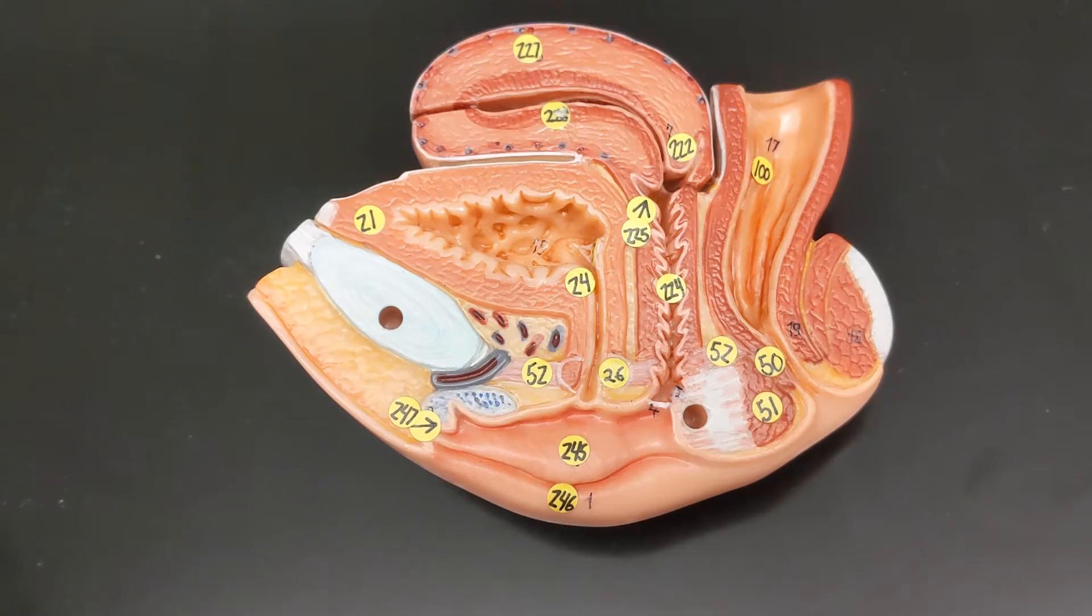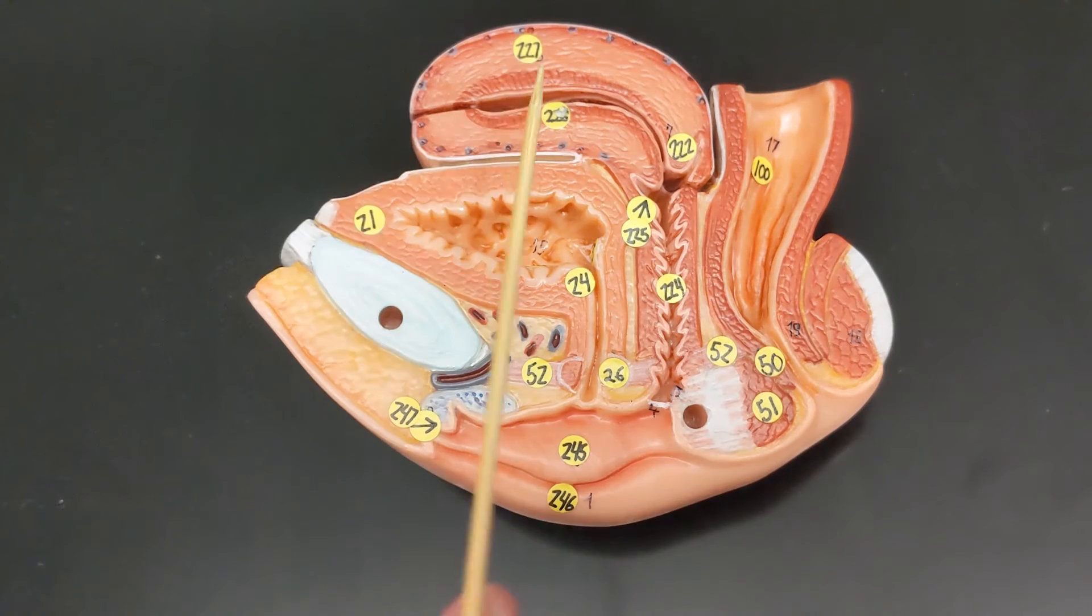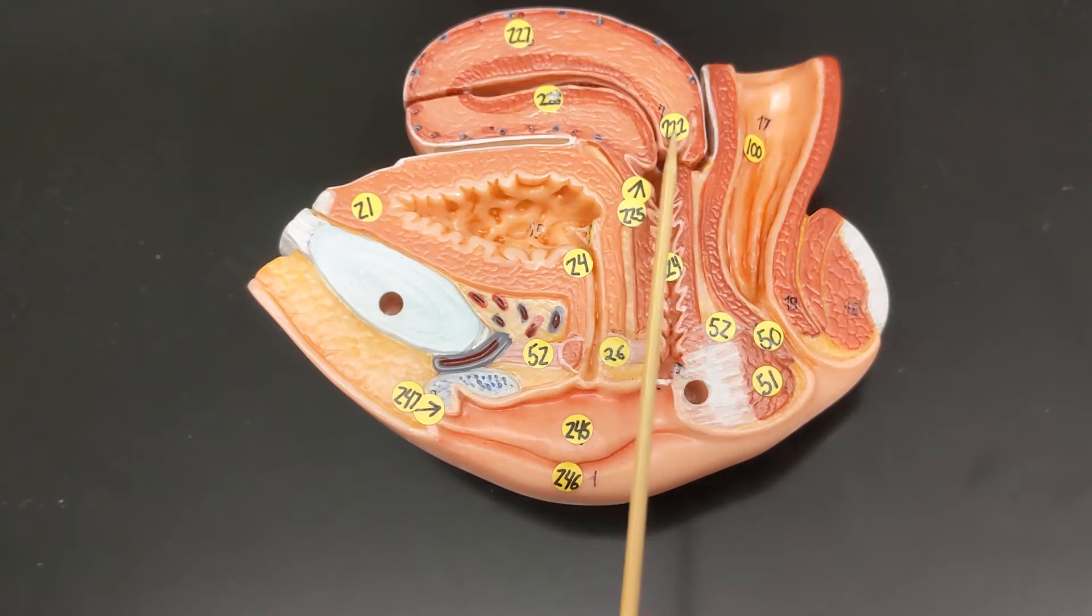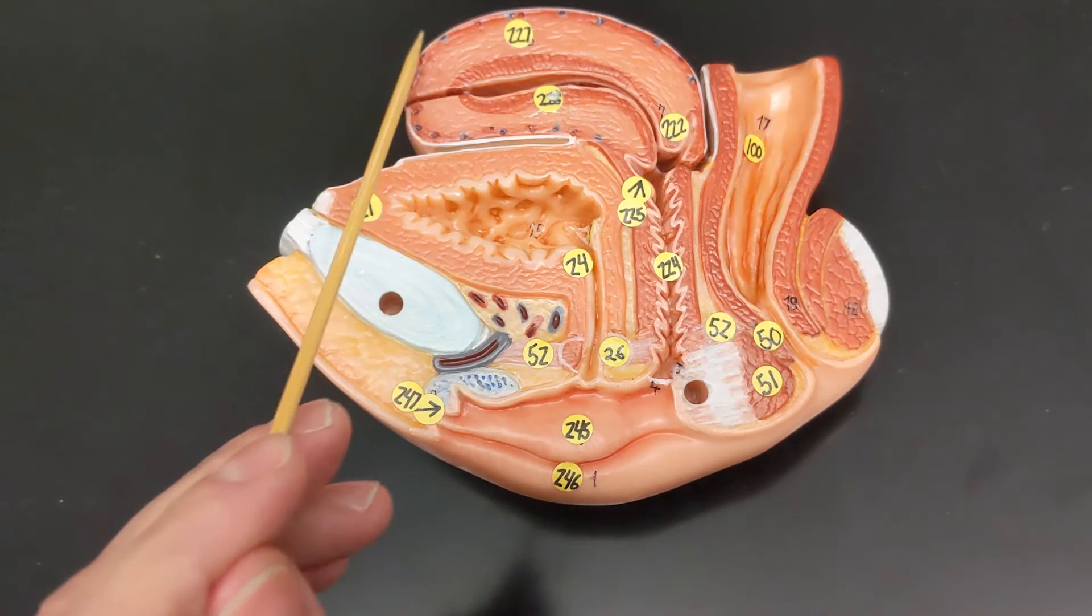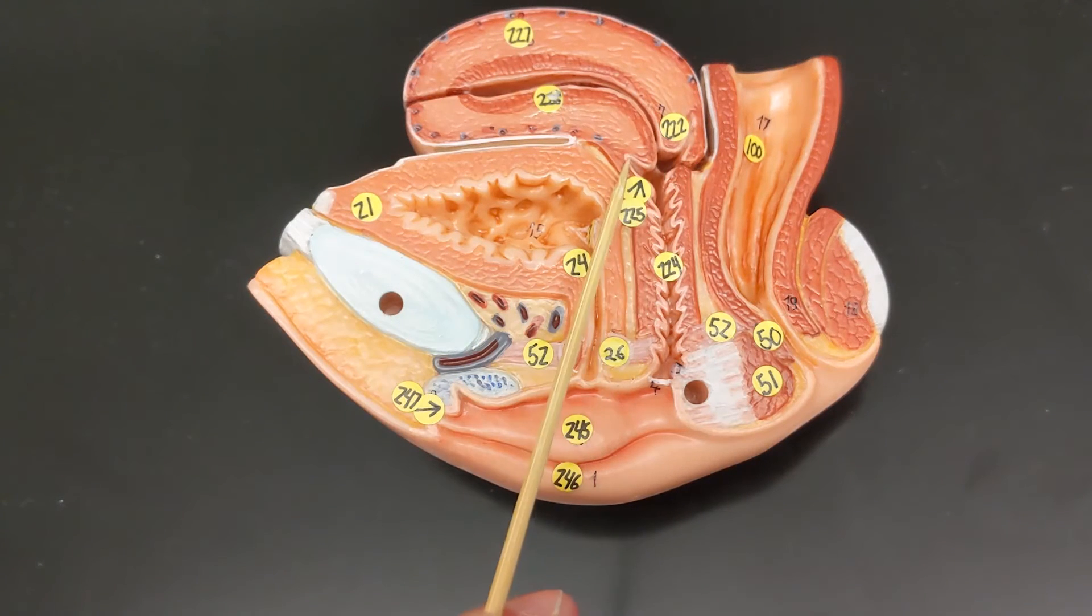The uterus also has three regions. There's this region, this one, and this area. So this is the fundus, the body, and the cervix.